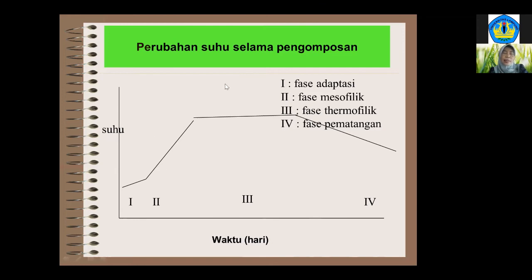Waktu fase pematangan bisa hari bisa minggu. Oleh karena itu salah satu indikator yang mudah digunakan apakah proses pengomposan itu berjalan adalah dengan mengukur suhu harian — setiap hari atau dua hari sekali kita ukur suhunya. Kalau sudah bisa naik seperti ini maka berarti prosesnya berjalan dengan baik. Tetapi kalau dia naik tetapi hanya sekitar 40 derajat C, berarti prosesnya belum optimal — perlu dikoreksi apakah kurang lembab, C/N rasionya tidak optimal, ataukah pH-nya terlalu rendah.